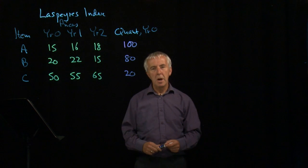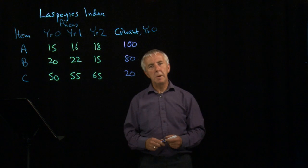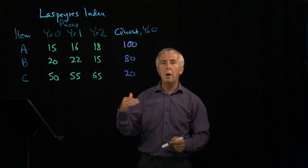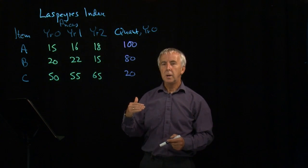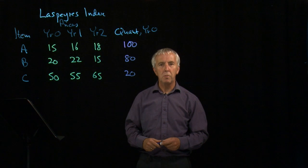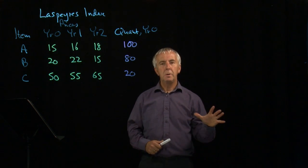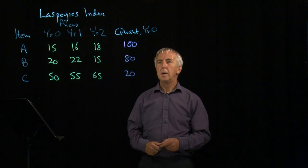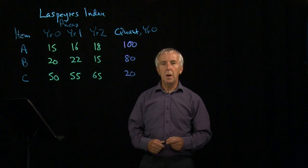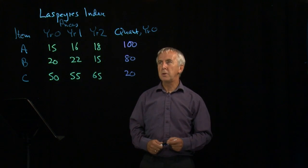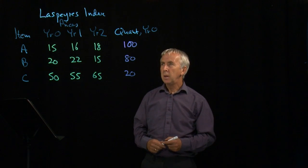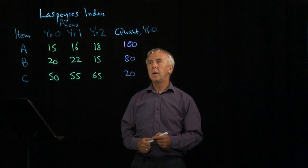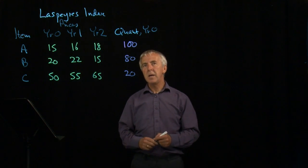When we want to find the price index for a basket of quantities where we've got several different items, each with their own different inflation rate, we've seen that there are different ways of doing it. There are two ways in particular that we will concentrate on now. One is named after the economist La Spare — it's called La Spare's index.